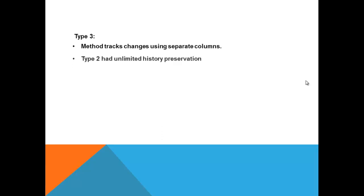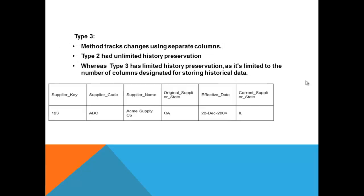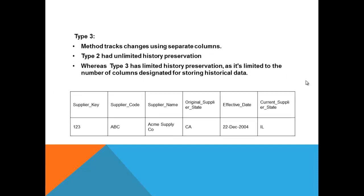Type 3 method tracks changes using a separate column. Type 2 has unlimited history preservation, whereas type 3 has limited history preservation, limited to the number of columns allocated for storing historical data. There is no new row added — only a new column. For example, supplier code ABC, supplier name AMKE, original supplier state is PA with effective date 2004, but current supplier state is IL — it is one record showing the previous and current state. If the supplier then moves to Texas, Illinois becomes the original state and Texas becomes the current state. That is type 3 dimension.